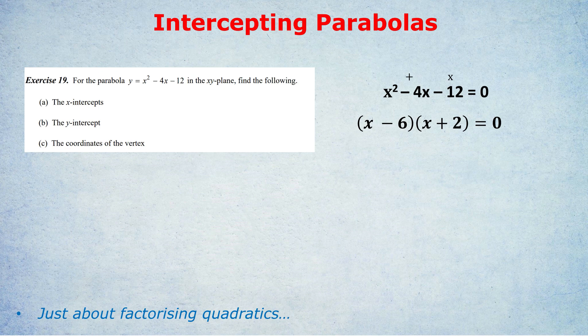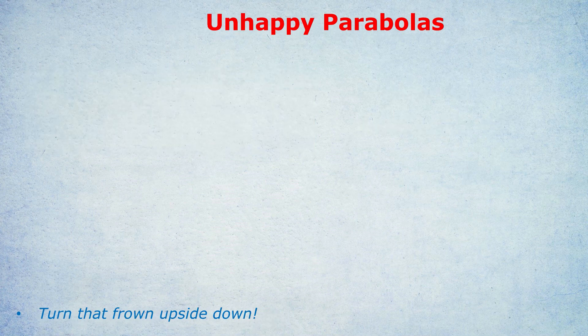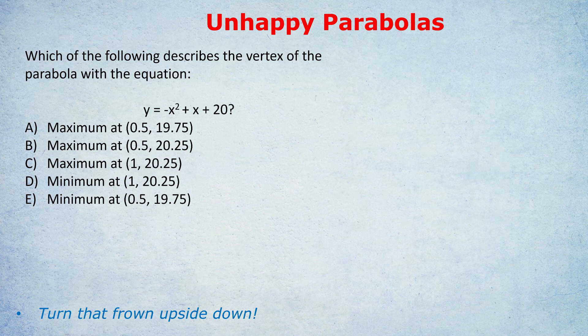So a few of you are now impatiently asking: what's your other secret? Let's cover this final difficult example. We have an unhappy parabola. The question is: which of the following describes the vertex of the parabola with the equation y equals negative x-squared plus x plus 20? It's difficult — very difficult — unless you know a further tip. The first step is as normal: we set the equation equal to 0, so we have negative x-squared plus x plus 20 equals 0.